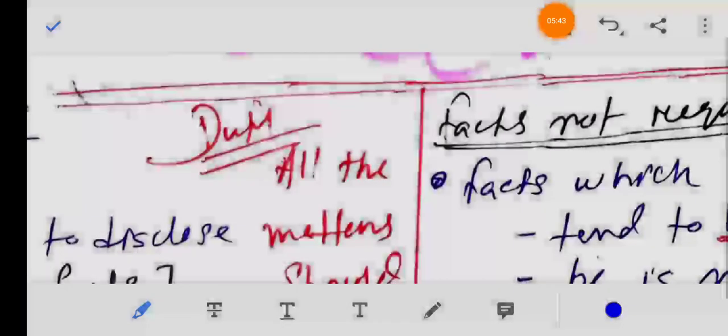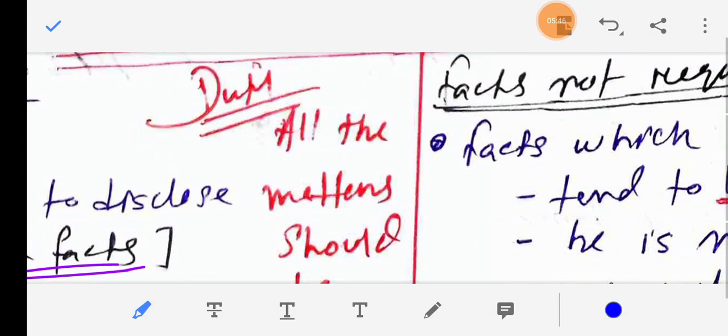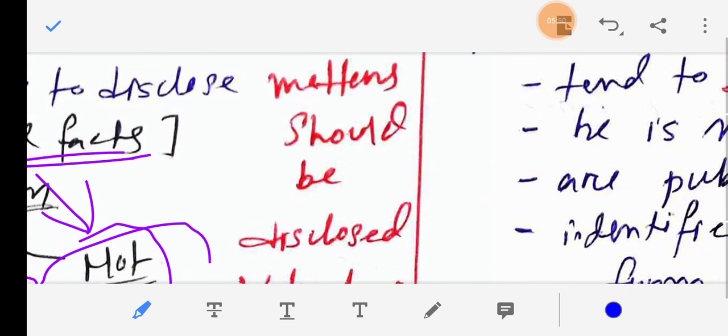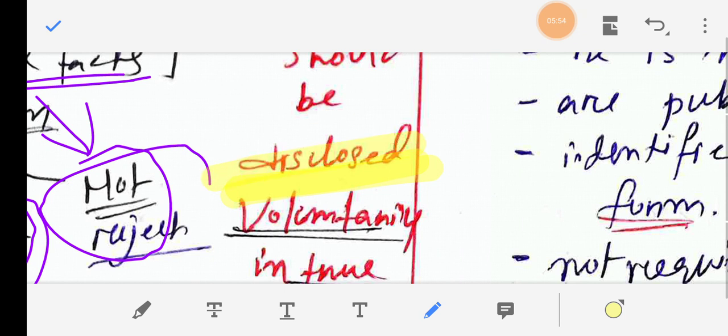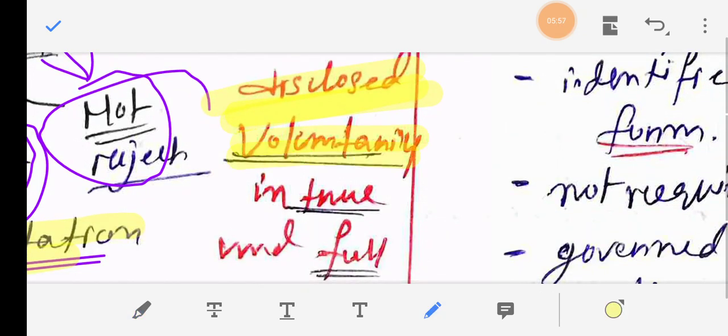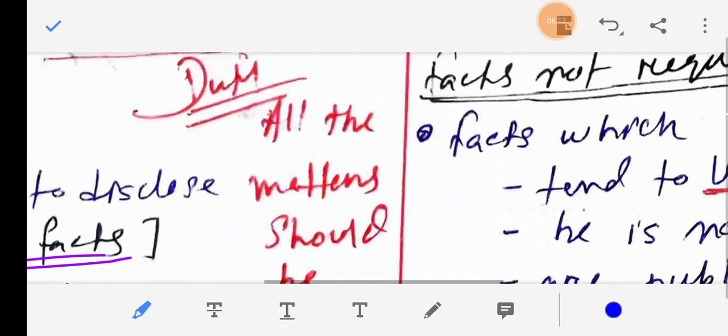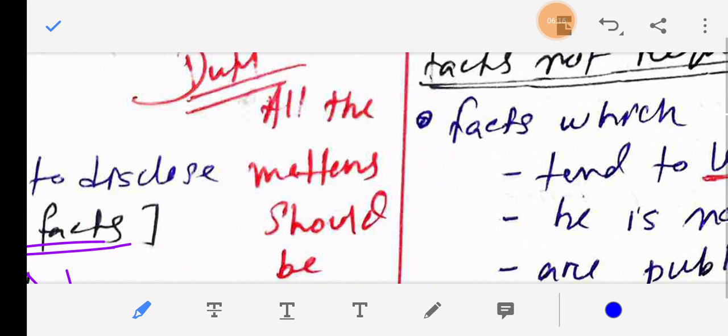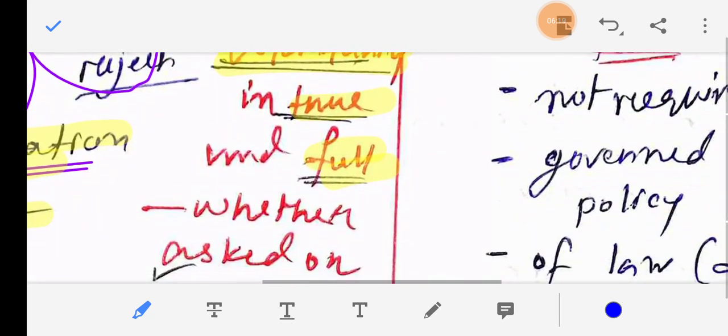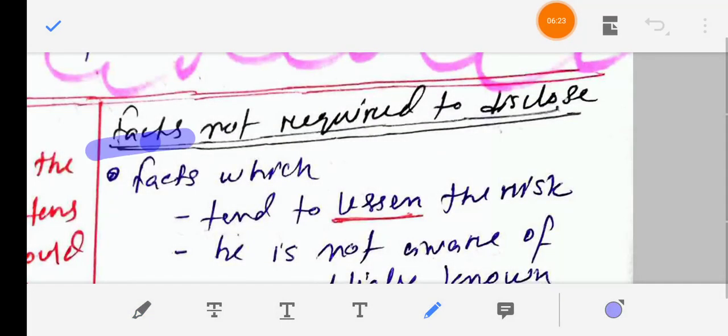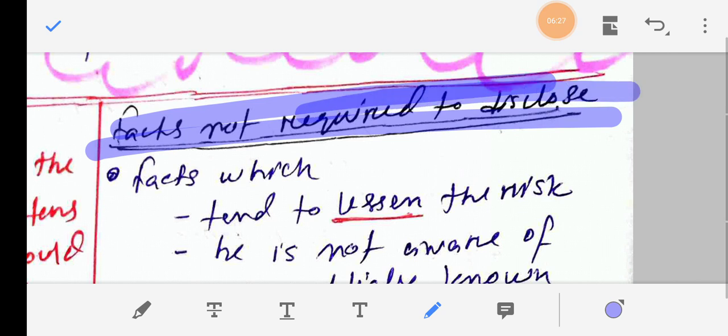The proposal form must be correctly filled. There should be no misrepresentation, concealment, fraud, mistake, no false statement, no half-truth, and no silence on conditions that need to be disclosed. All material matters should be disclosed. All matters must be disclosed voluntarily, in true and full, completely. It's my duty. I am duty bound to write all material facts properly. All matters should be disclosed voluntarily, in true and full, whether asked or not.